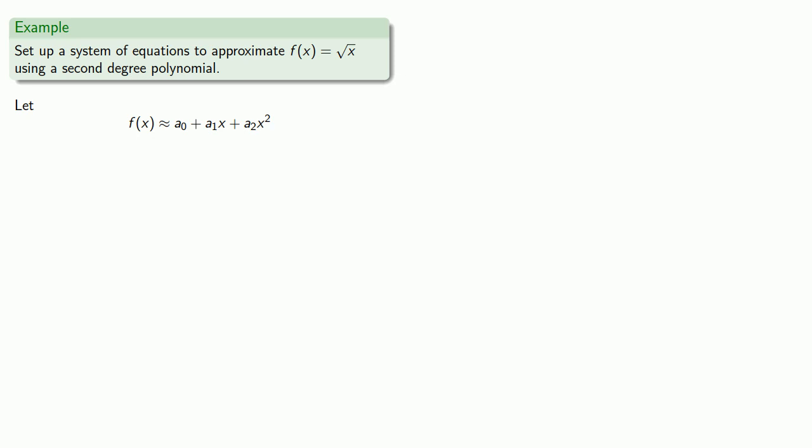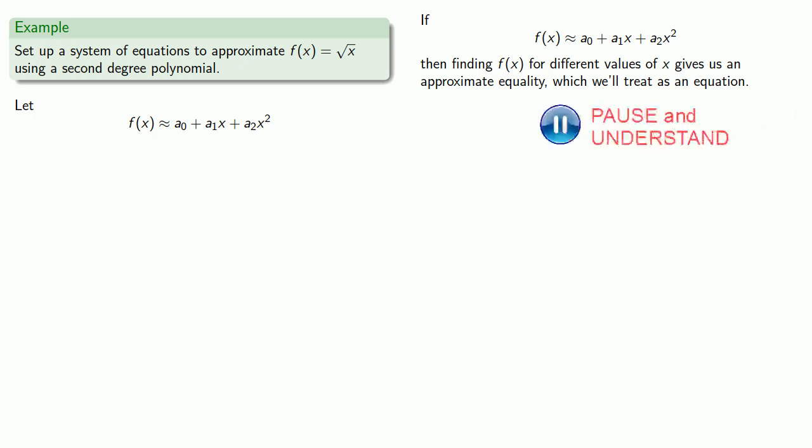And if f(x) is approximately equal to this second-degree polynomial, then finding f(x) for different values of x gives us an approximate equality, which we'll treat as an equation. Since there are three unknowns (a₀, a₁, a₂), we'll need three equations, so we'll need three values of x. But which ones?